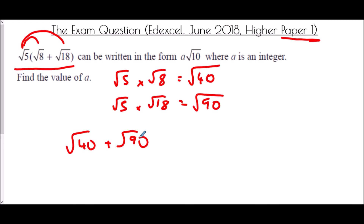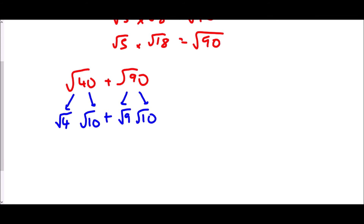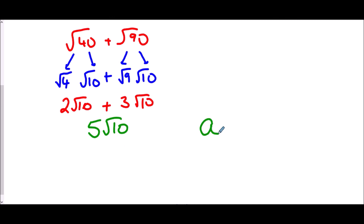And we need to simplify this. There's a clue in the question — it says it's going to be a root 10. So I want to separate each of these into something times root 10. That's handy because 10 goes into 40 and 10 goes into 90. Root 40 is root 4 times root 10, and root 90 is root 9 times root 10. Root 4 is 2, so that's 2 root 10. Root 9 is 3, so that's 3 root 10. Add them together: 2 root 10 plus 3 root 10 is 5 root 10. And since we need a root 10 where a is an integer — it certainly is — therefore a equals 5.